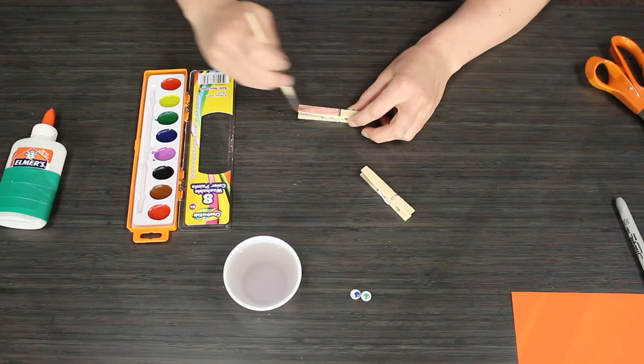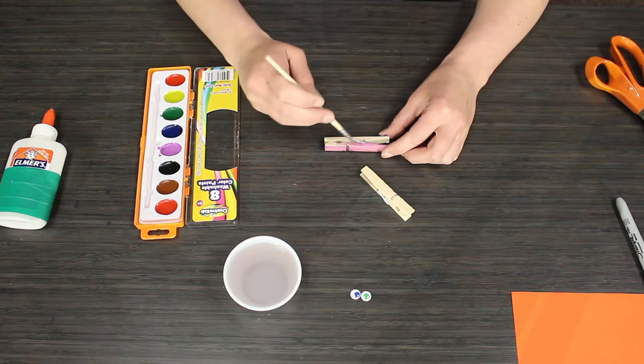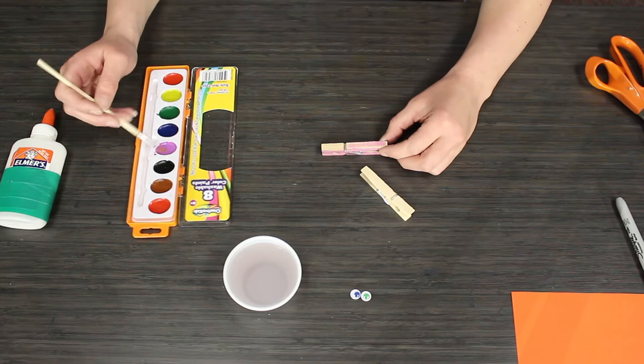For the main activity, our first step is to paint the wooden clothespin to make the dragonfly's body. You can paint it with a single color like I did or you can make it multicolored or put designs on there.